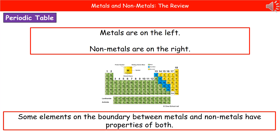Where do we find metals and non-metals on the periodic table? As you know, in the exam you're going to have the data booklet, which will have a copy of the periodic table. When you look at it, you've got all of the metals on the left-hand side — as you're looking at the diagram in the middle there, they're all the green ones.